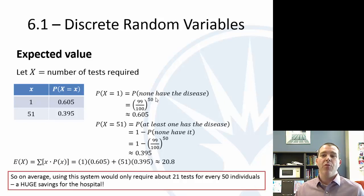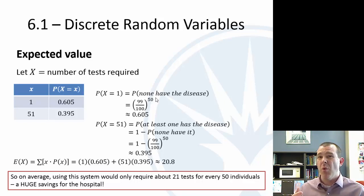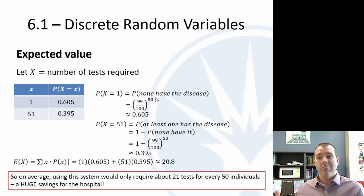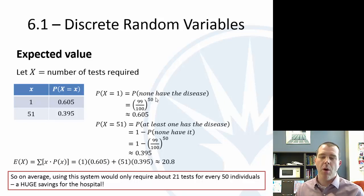So if the director did pooling of the 50 samples, we'd only have to do about 21 tests instead of 50 — a huge savings. Sometimes you'd have to do 51, but about 61% of the time you'd get lucky and only have to run one test. So there's a lot of net savings — a great example of using expected value to help solve a real problem.